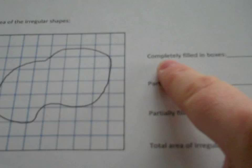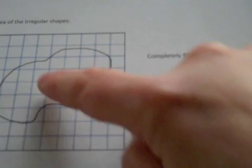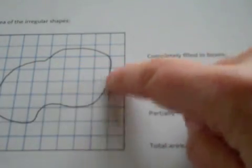The first thing we want to do is find out how many are completely filled in boxes, meaning that when I look at this irregular shape that I've drawn, I'm going to come through and I'm going to color all of the grid squares that are completely inside of this irregular shape.